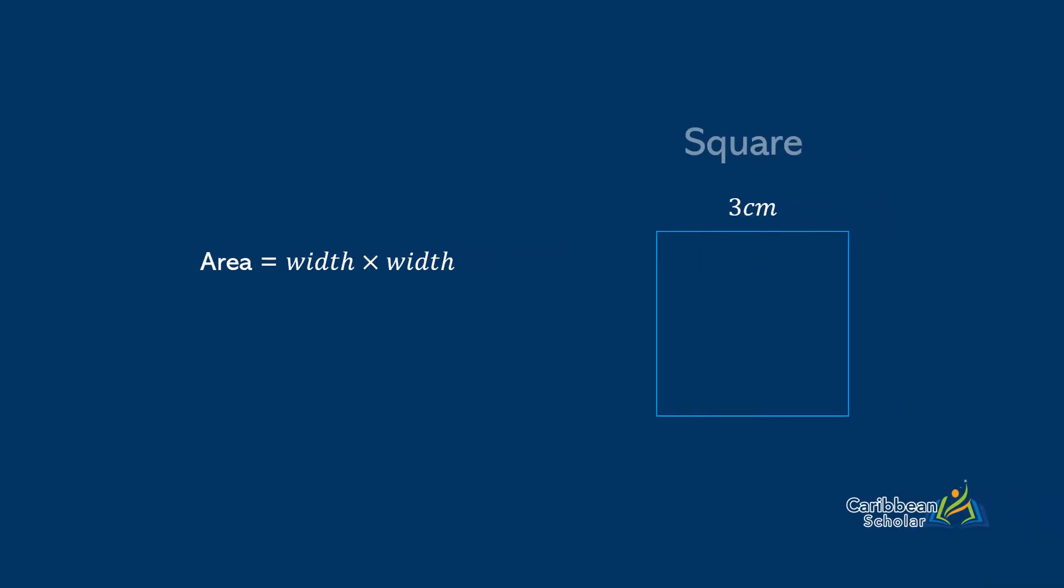Now the area of a square is also given by length by width, but since the length and the width are the same size, you could just square the side to get the correct answer. So here I have width by width, which is 3 by 3, and this gives 9cm².